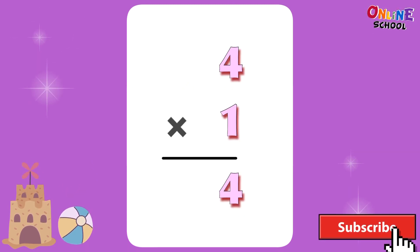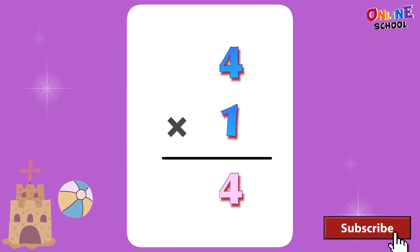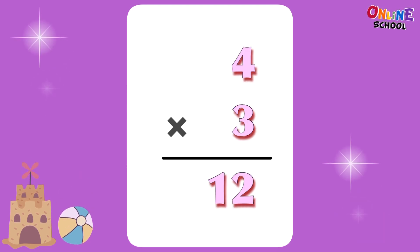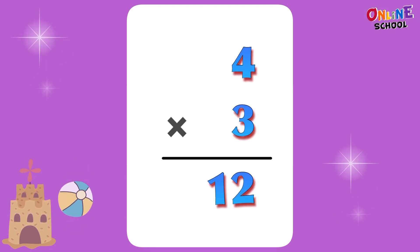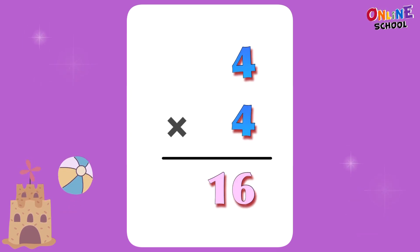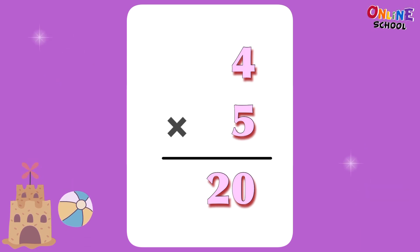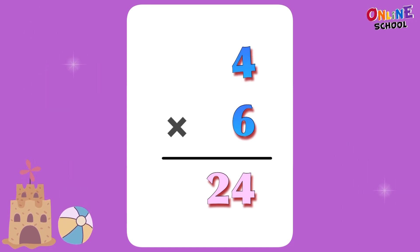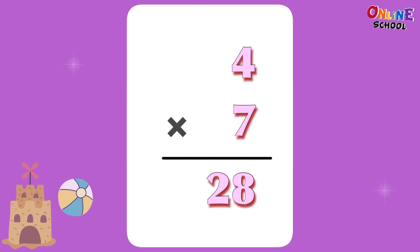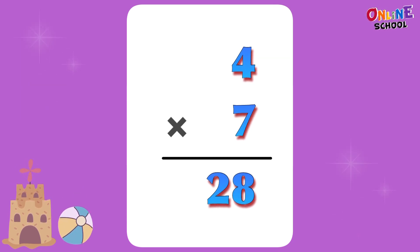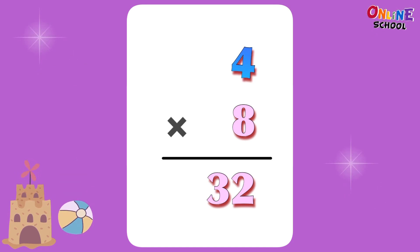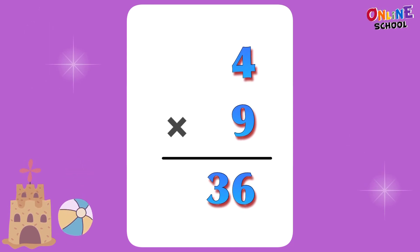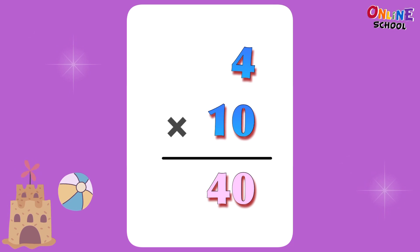4 times 1 equals 4. 4 times 2 equals 8. 4 times 3 equals 12. 4 times 4 equals 16. 4 times 5 equals 20. 4 times 6 equals 24. 4 times 7 equals 28. 4 times 8 equals 32. 4 times 9 equals 36. 4 times 10 equals 40.